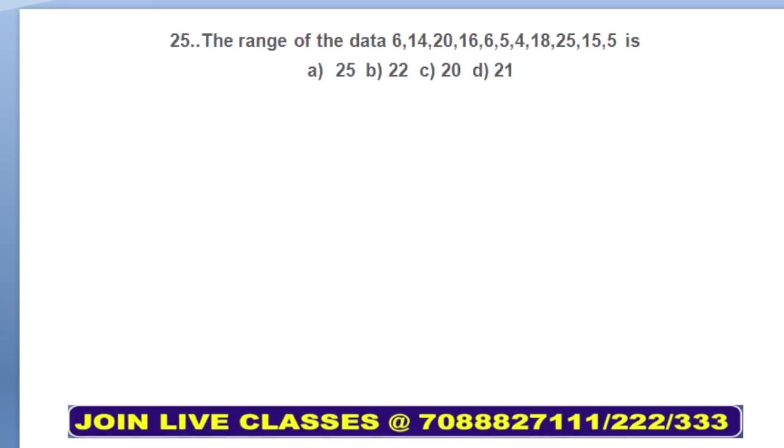Moving on to question number 25. The range of the data 6, 14, 20, 16, 6, 5, 4, 18, 25, 15, and 5. Range is maximum value minus minimum value. What is maximum value? 25. What is the minimum value? 4. Answer comes out to be 21. Option D will be your answer.